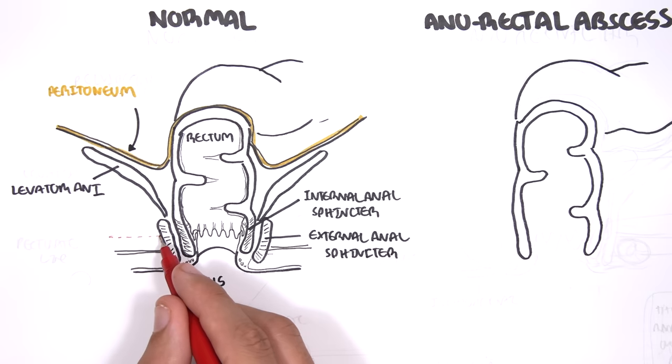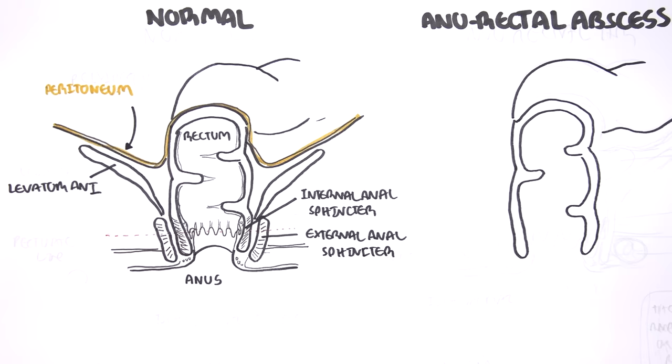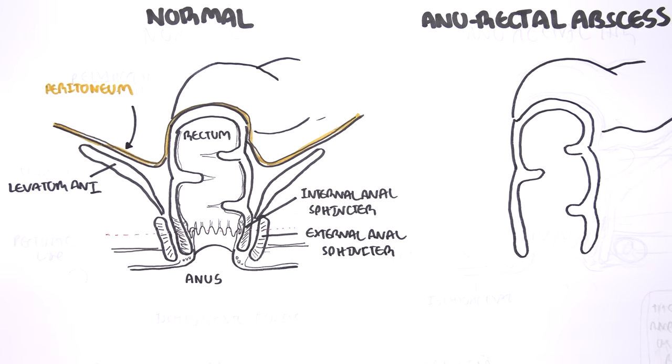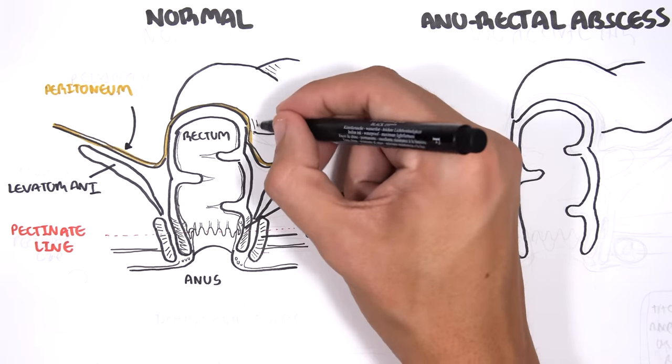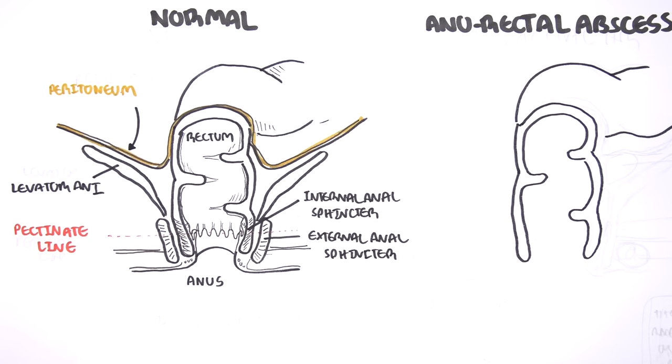An important anatomical site to know is the pectinate line, also known as the dentate line. The pectinate line is a clinically important landmark because it is visible and approximates the level of certain anatomical changes. Embryologically speaking, above the pectinate line are cells from endoderm origin, and below the pectinate line is ectoderm in origin.